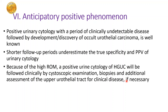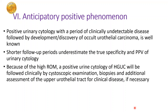There is something called the Anticipatory Positive Phenomenon — if we follow cases we have called positive and the period of follow-up is relatively less than six months and we do not discover a malignancy, it tends to underestimate the true specificity and positive predictive value of urine. These patients need to be followed for a longer period, which will lead to discovery of occult urothelial malignancy. A positive urine cytology will be followed clinically by cystoscopy, biopsies, and additional assessment of even the upper urinary tract if nothing is found in the urinary bladder.